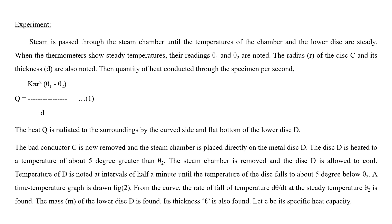Once the disc D temperature is more than 5 degrees above theta-2, the steam is removed and D is allowed to cool. The temperature is noted at half-minute intervals as the disc falls from about 5 degrees above theta-2 to about 5 degrees below theta-2. From the time-temperature graph, the rate of fall of temperature dθ/dt at steady temperature theta-2 is determined.